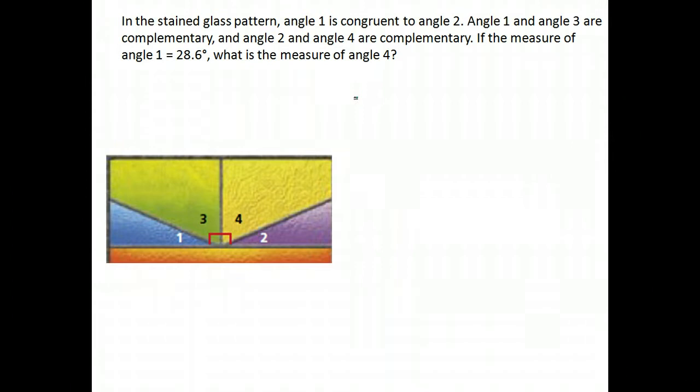All right, this is to help you with a question that is on your project. It says in a stained glass pattern, angle 1 is congruent to angle 2. So they appear that way. I'm going to go ahead and mark them. Congruent means they are the same size. So I've now marked angle 1 and angle 2. Whatever they are, they are the same.